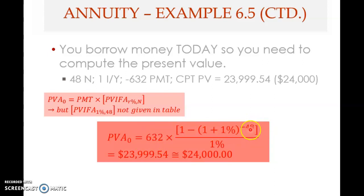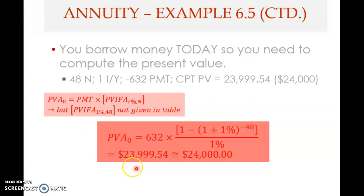Applying this formula gives the answer: $23,999.54 — slightly less than $24,000. There are four methods to solve time value of money problems. The first is the formula, which we just used. The second is the present value interest factor table. Using the table method: PV = 632 × PVIFA(1%, 48). You would go to the appendix in your textbook and look up the one percent column.